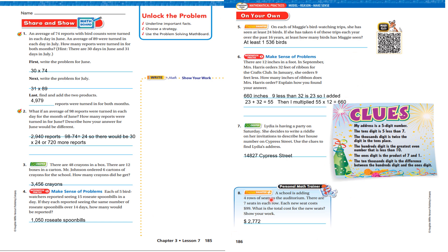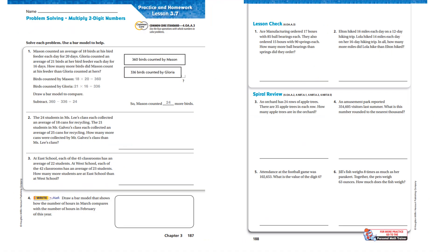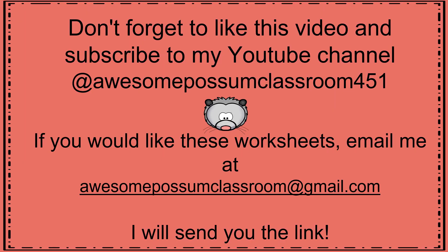Boys and girls, if you missed something on here and you're in my class, you need to contact me so that I can help you make sense of what you did wrong. Here's your practice and homework for lesson 3.7. Make sure you take a snapshot of it and get it to me so I can grade it. This is the end of lesson 3.7 and lesson 3. You will have your test in the next couple of days. Don't forget to like this video and subscribe to my YouTube channel at awesomepossumclassroom451. If you would like these worksheets, email me at awesomepossumclassroom@gmail.com and I will send you the link.